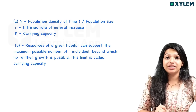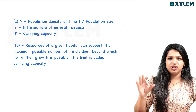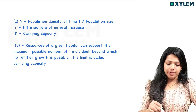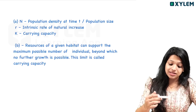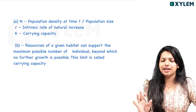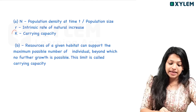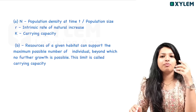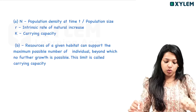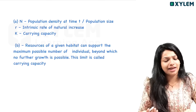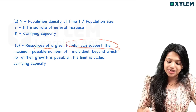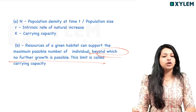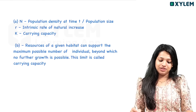N is the population density at time t. r is the intrinsic rate of natural increase. K is the carrying capacity. Resources of a given habitat can support a maximum possible number of individuals, beyond which no further growth is possible.